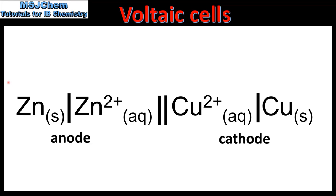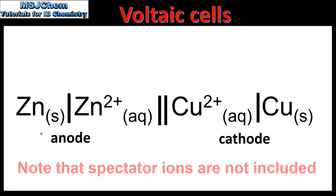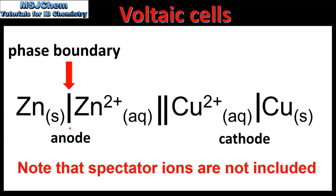Next we'll look at a shorthand notation for describing the components of a voltaic cell. Using this notation the anode is written on the left and the cathode on the right. A solid vertical line represents a phase boundary, for example between the solid zinc and the aqueous zinc ions. A double vertical line represents the salt bridge.